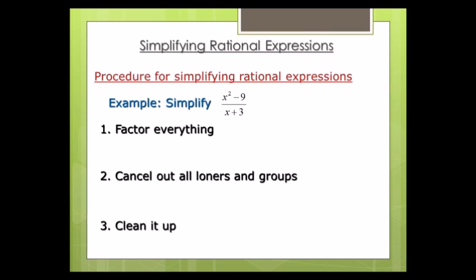Let's start with the top. I have x squared minus 9, so x squared minus 9 factors down to x plus 3 and x minus 3. That's difference of two squares. I can't do GCF — there's nothing in common between x squared and 9 — so it is two terms, and I apply the difference of two squares. I'm done factoring the top, now I go to the bottom.